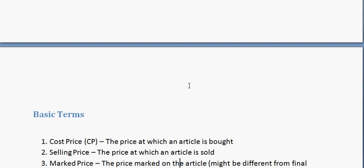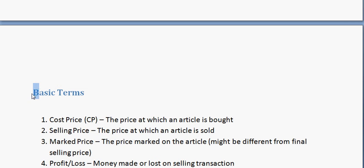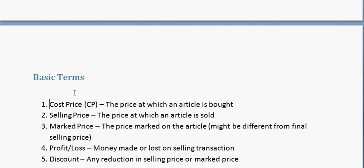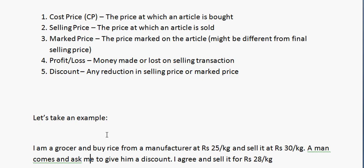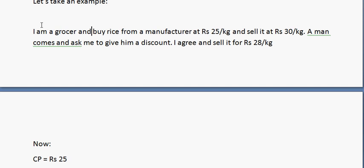The basic terminologies in this chapter are very simple. There is cost price (CP) — the price at which an article is bought. There is selling price (SP) — the price at which it is sold. Marked price or MRP (maximum retail price) is the price marked on the article, which might differ from the final price. Then there is profit or loss — money made or lost during a transaction — and discounts, which is money reduced from the marked price.